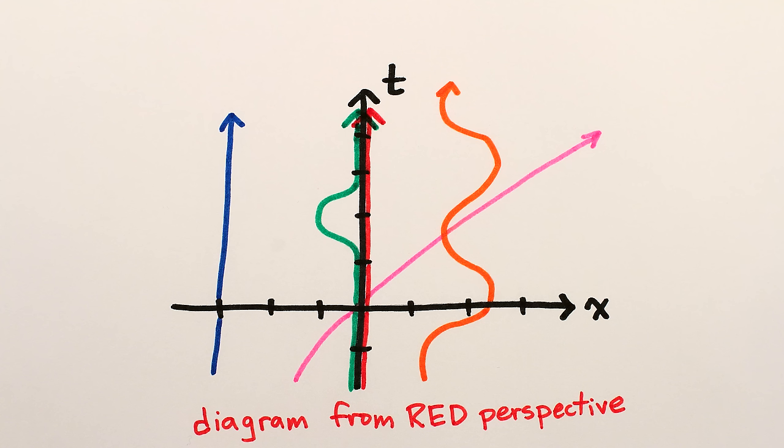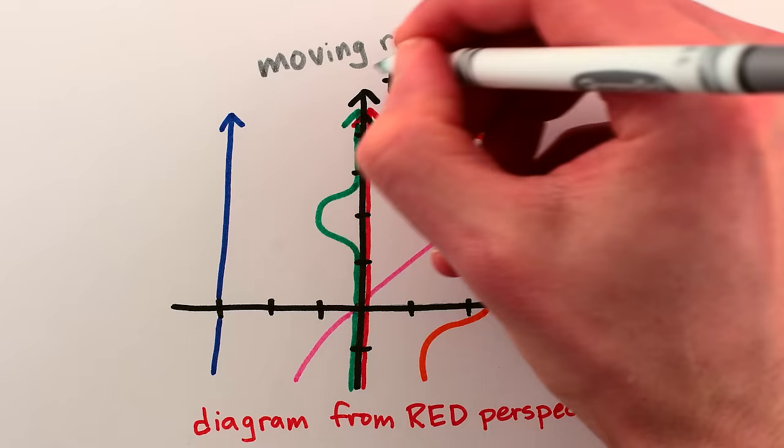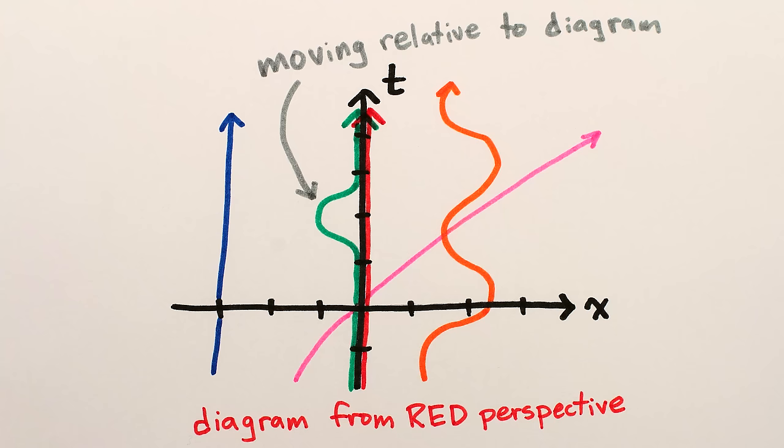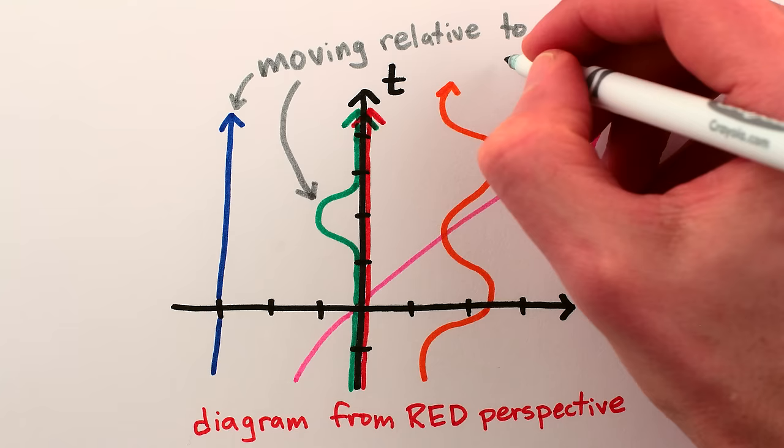If on a spacetime diagram the world line describing your motion leaves x equals 0 and goes anywhere else, that means you're moving relative to the perspective of that particular diagram, and thus it's not your perspective.